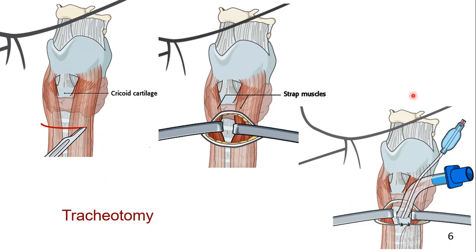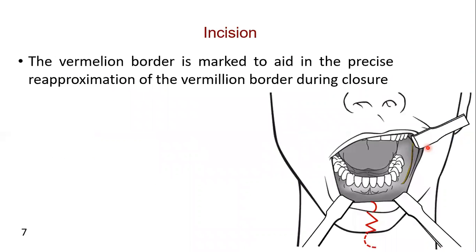Alternatively, a prolonged nasoendotracheal intubation may be performed to avoid a tracheostomy. The vermilion border is marked using the back of a 15 blade and surgical marking ink to aid in the precise re-approximation of the vermilion border during closure.